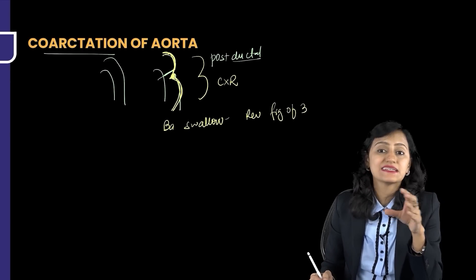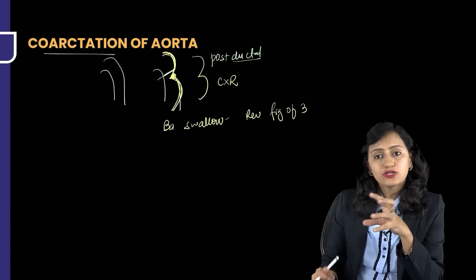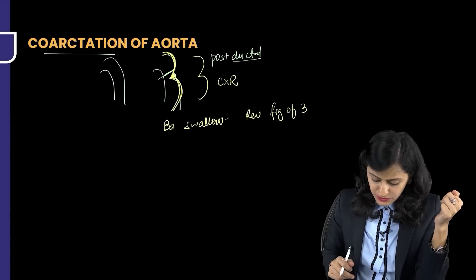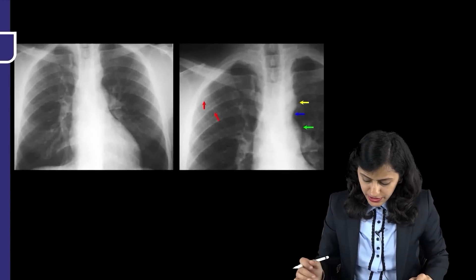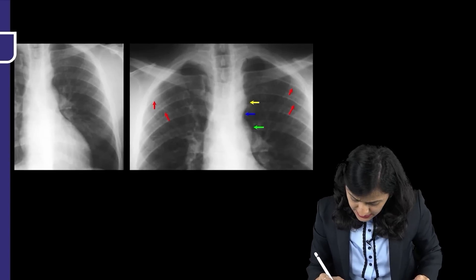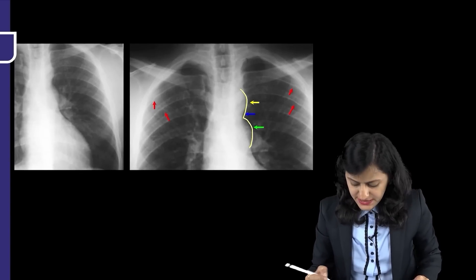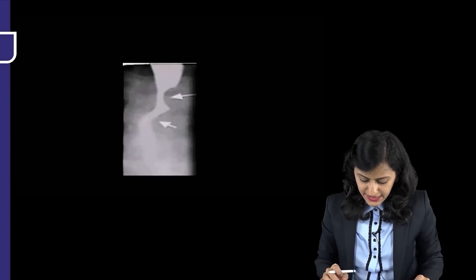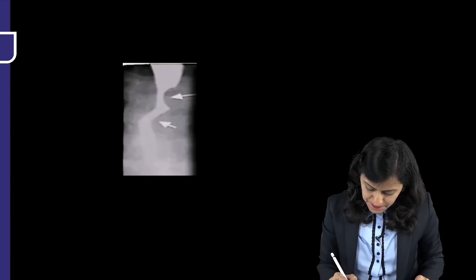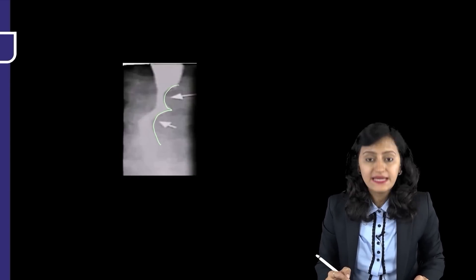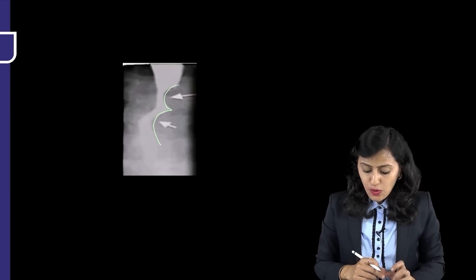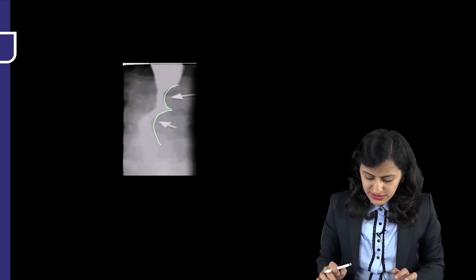On barium swallow, the reverse figure-of-three sign is seen. So: figure-of-three on chest X-ray, reverse three on barium swallow. The image demonstrates the figure-of-three sign at the coarctation site, and the corresponding reverse figure-of-three sign on barium swallow.